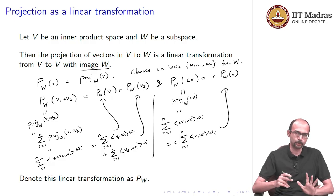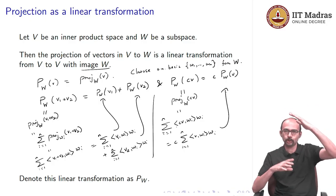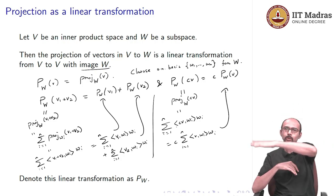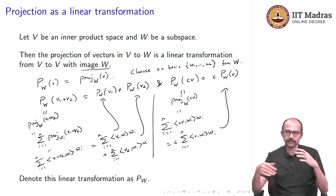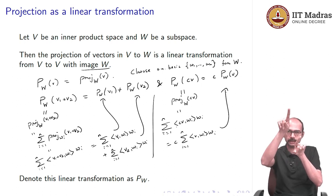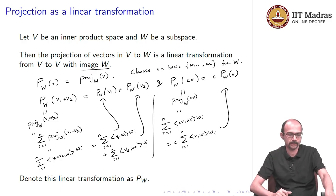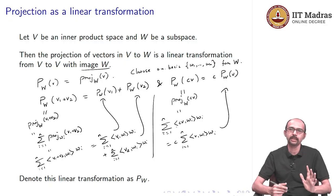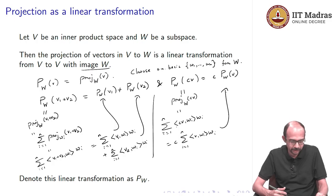Geometrically this makes sense: if the length of your vector is larger, its shadow is proportionally larger (scalar property). And if you take the shadow of the sum of two vectors, it equals the sum of the individual shadows (additivity), consistent with the parallelogram law. The projection is like casting perpendicular shadows, which naturally respects vector addition and scalar multiplication.